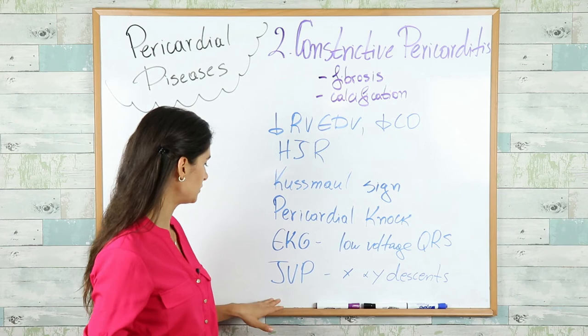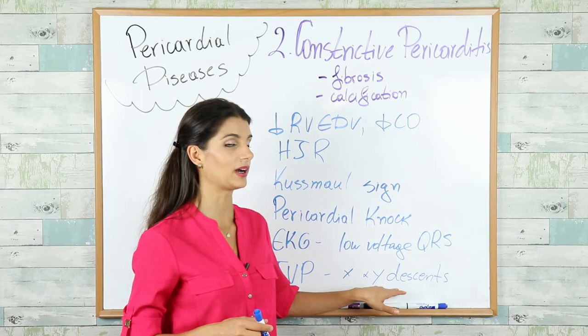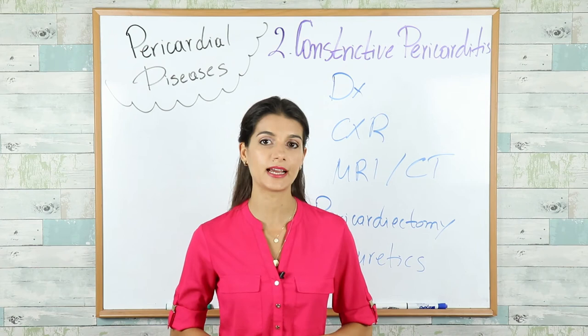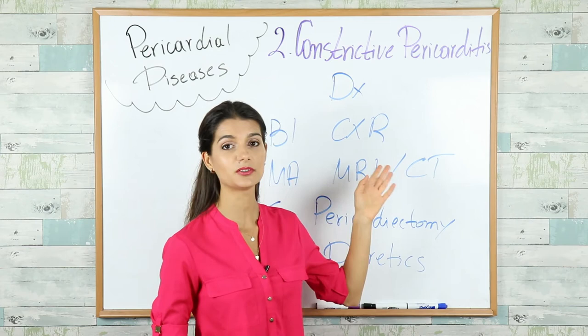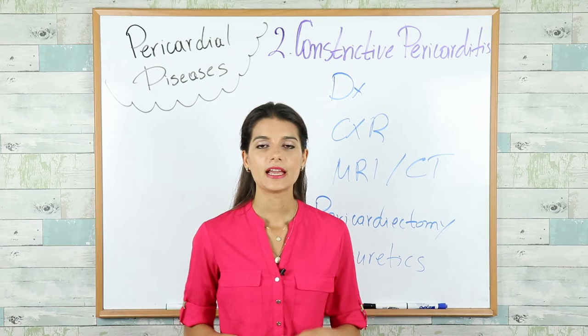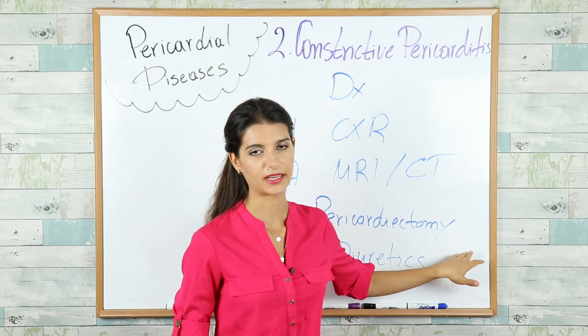The best initial test for diagnosing constrictive pericarditis is chest X-ray, and the most accurate tests are CT scan and MRI of the chest. By the way, MRI is also the most accurate test for diagnosing acute pericarditis. The definitive treatment is pericardiectomy — surgically removing part of the fibrosed pericardium.